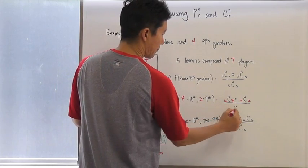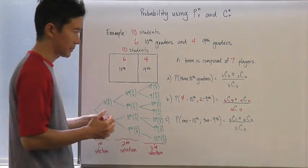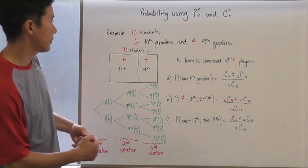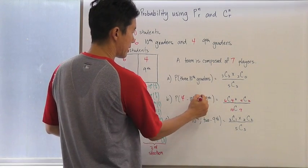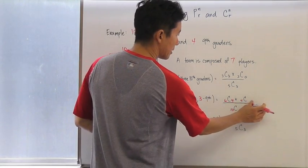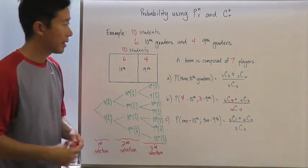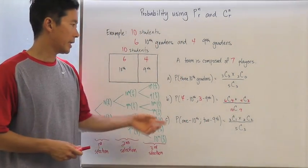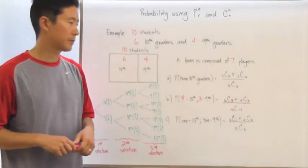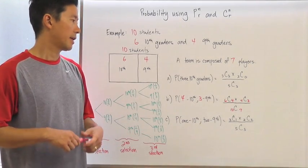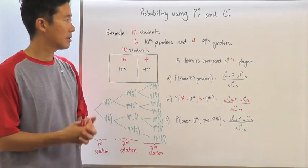Dividing by C(10,7) — choosing seven out of all ten students — gives us the probability of choosing four tenth graders and three ninth graders out of ten students to make a team of seven.